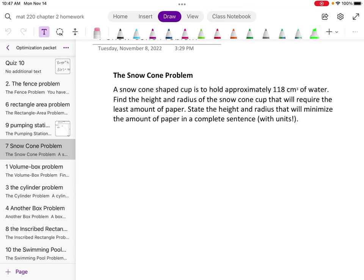So we're given a few pieces of information. We're told that we have a snow cone shaped cup that holds approximately 118 cubic centimeters of water. We're asked to find the height and radius of the snow cone cup that will require the least amount of paper.